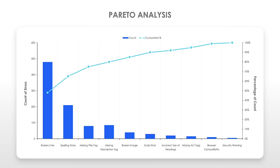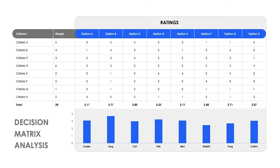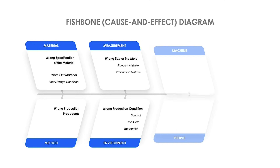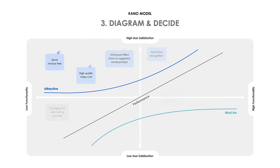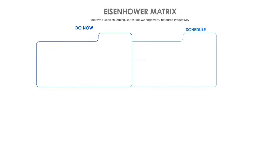How do you better organize your priorities to make stronger decisions backed up by data? In this video, you'll learn how to use the top decision-making tools like Pareto and Decision Matrix analyses, Fishbone and Kano diagrams, and the Eisenhower Matrix.